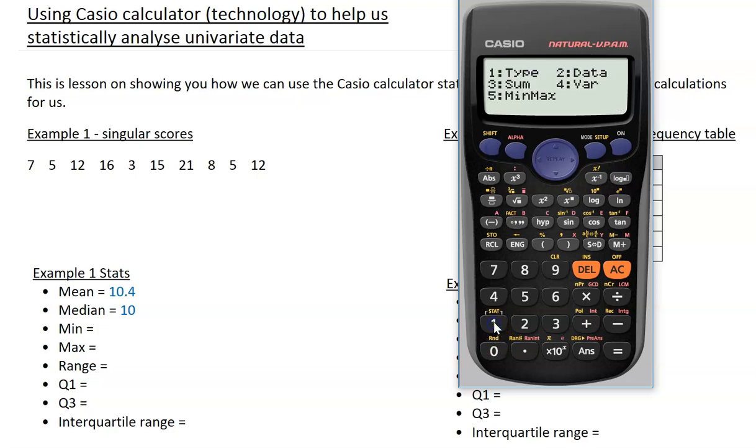Accessing our min and max scores now. So again we'll go to option 5, select 1 for our minimum and press equals. Our minimum score is 3. Select our min and max, we want our max score, select option 2 and equals, that's 21. Those two scores help us develop our range, which is 21 minus 3, which gives us a range of 18.